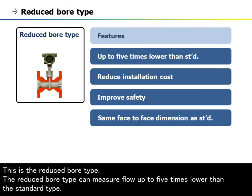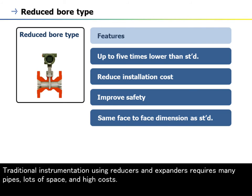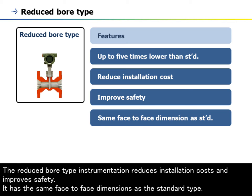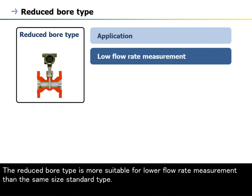This is the Reduced Bore Type. It can measure flow up to five times lower than the standard type. Traditional instrumentation using reducers and expanders requires many pipes, lots of space, and high costs. The reduced bore type reduces installation costs and improves safety. It has the same face-to-face dimensions as the standard type and is more suitable for lower flow rate measurement.